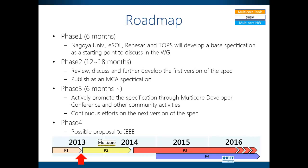The roadmap of SHIM is like this. We've completed phase one, which is preliminary work to come up with a basis for MCA working group activity. We are currently in phase two, which goes on until the end of next year, and we actively discuss and further develop the specification so that we can publish the MCA specification by the end of 2014. In phase three, we will continue to the next version of SHIM, and at the same time, we are going to actively promote the specification through different conferences. In phase four, there's a possibility we could make a proposal to IEEE for wider adoption of the SHIM specification.